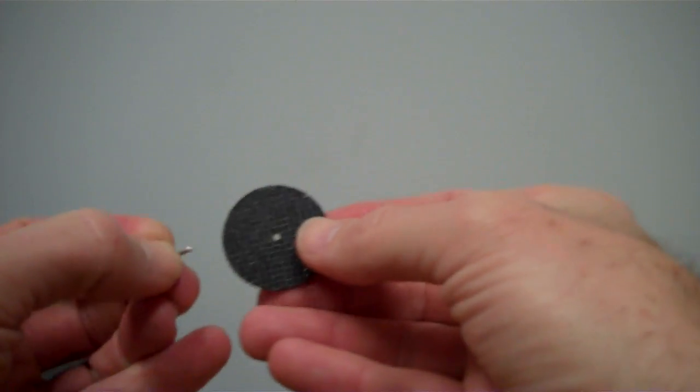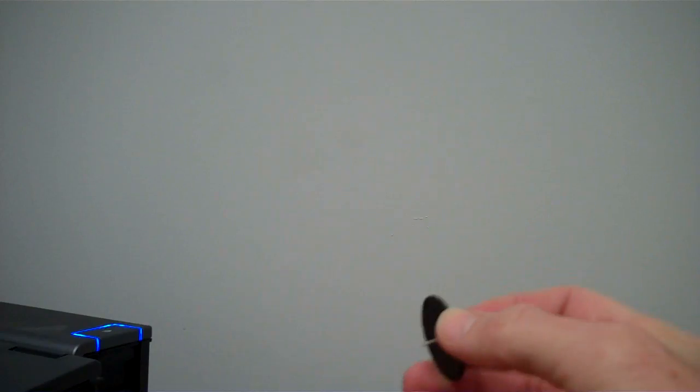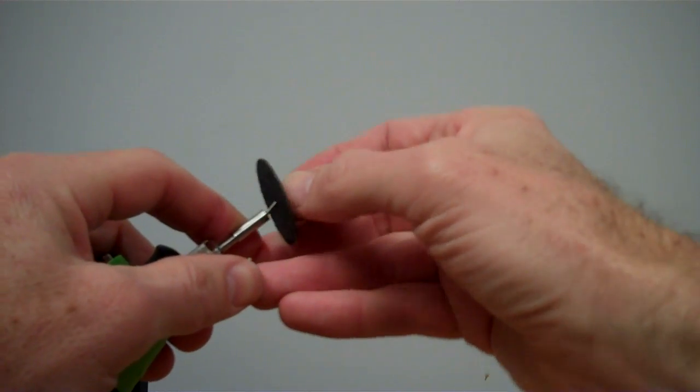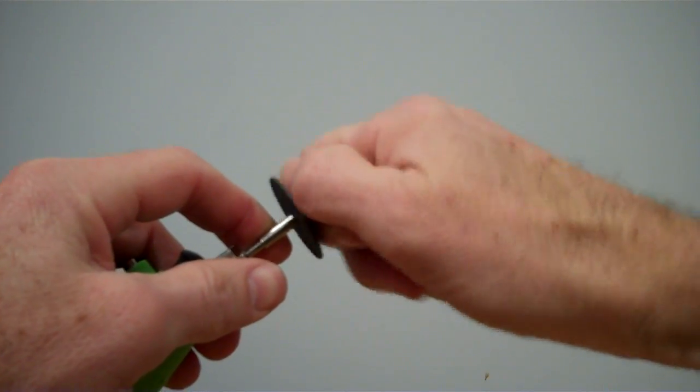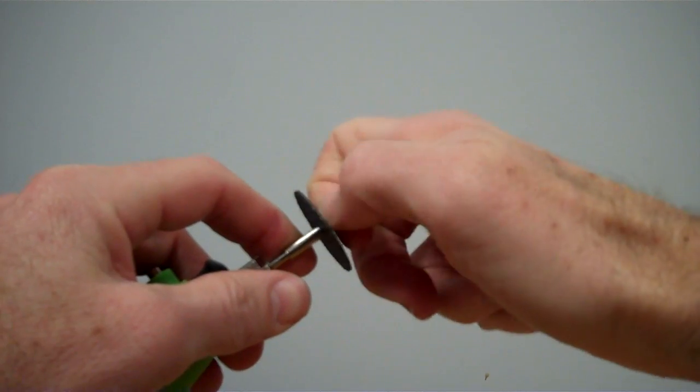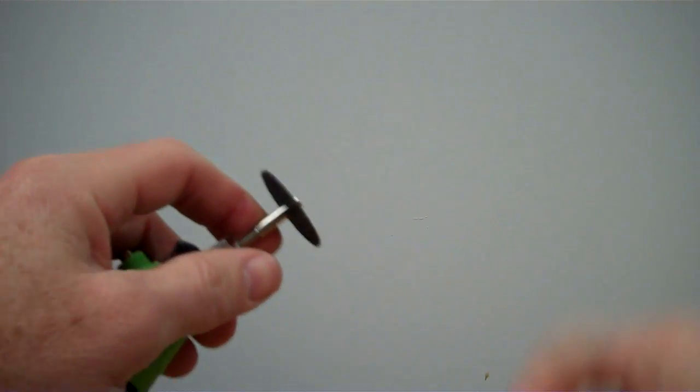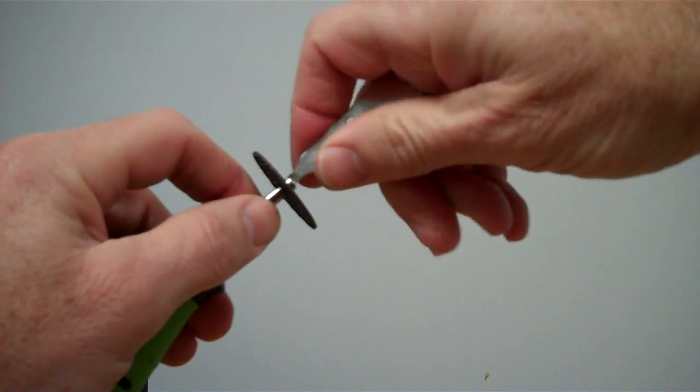So what we're going to do is basically thread that washer and screw into that hole and then go ahead and screw that into the end of our mandrel here. You can start it by hand and get it most of the way by hand, then take your screwdriver and finish tightening it.